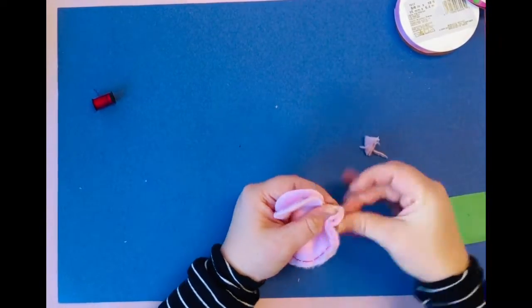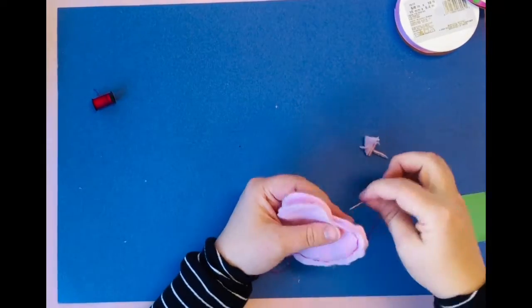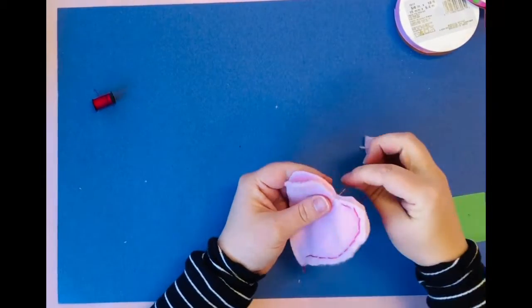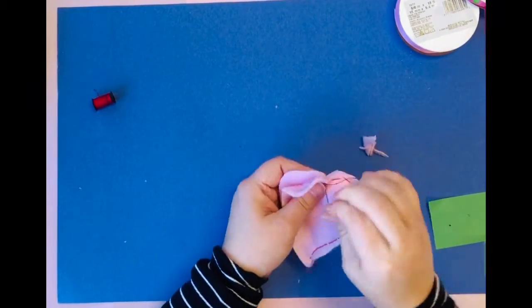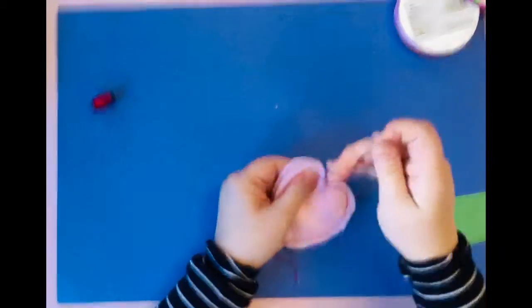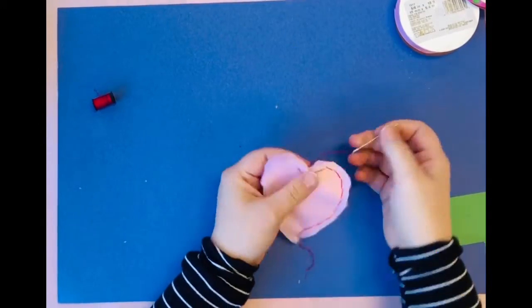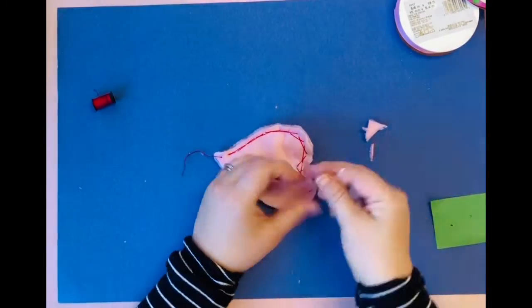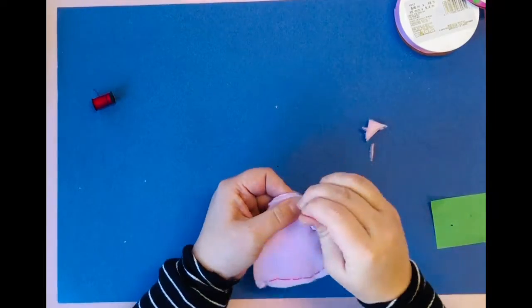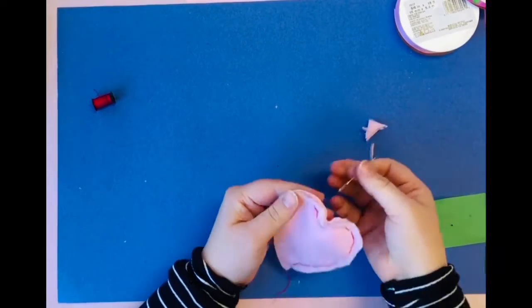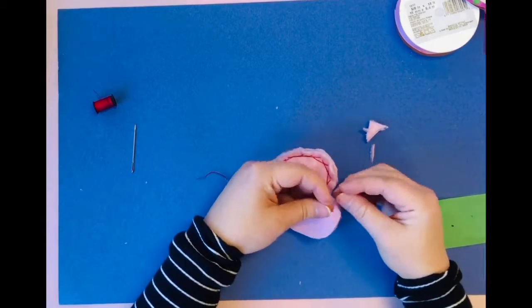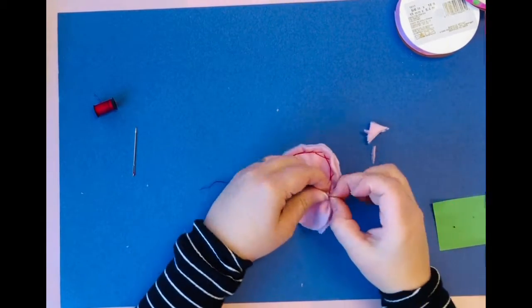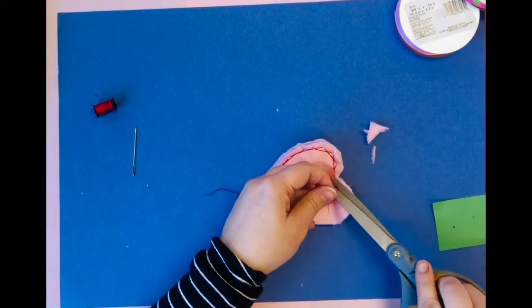So I'm continuing with the back stitch and really you can sew your heart any way that you want, whatever is easiest for you. I am doing shorter stitches, not really long stitches, because I don't want any of the fluff stuff to come out of the sides.